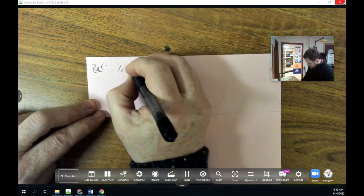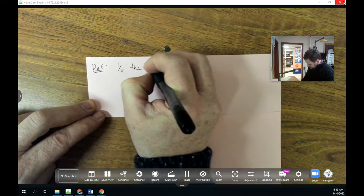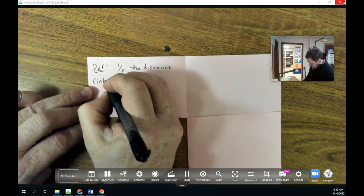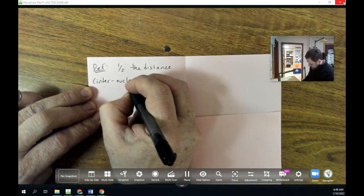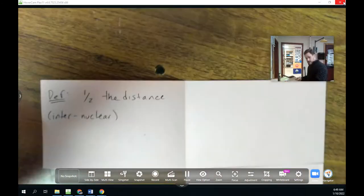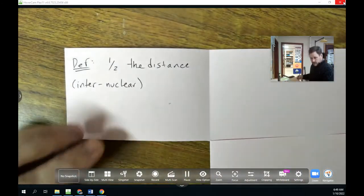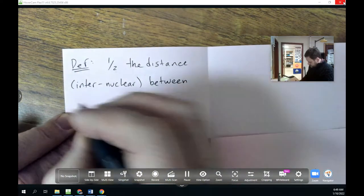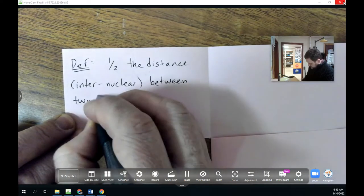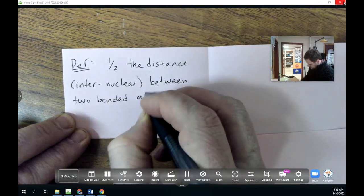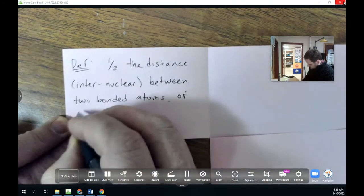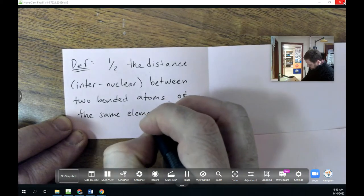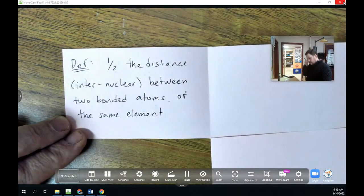So I'm going to write one half the distance. That's called the internuclear distance. I'll put that in parentheses. So one half the distance, or the internuclear distance between two bonded atoms of the same element.